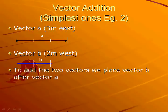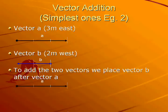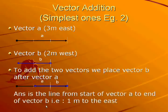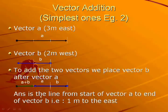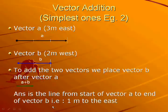To add the two vectors we place vector B after vector A. So here is vector A, and then we place vector B at the end of vector A like this. The answer is the line from the start of vector A to the end of vector B, shown by this green line. And that's a vector of 1 meter to the east.